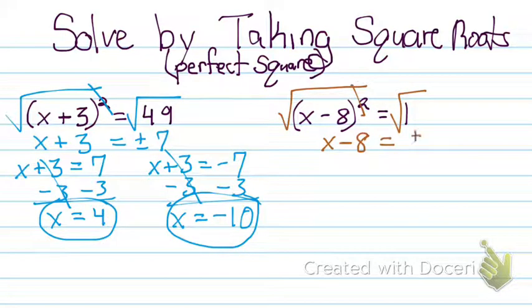And the square root of 1 is plus or minus 1. So then my two separate equations will be x minus 8 equals 1 and x minus 8 equals negative 1.